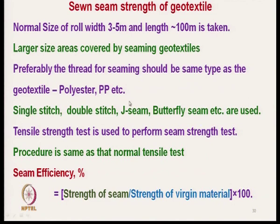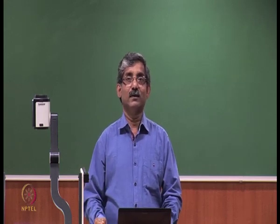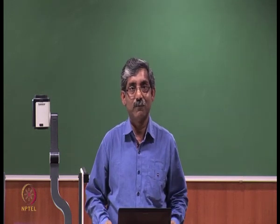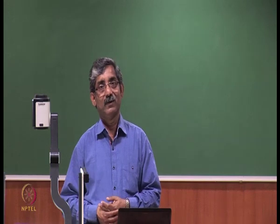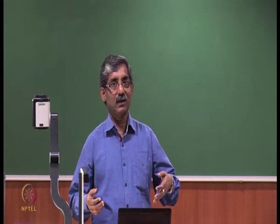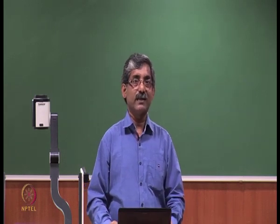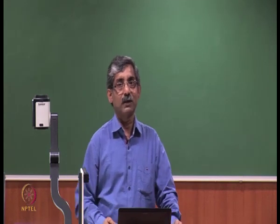Stitches are of different types depending on the application: single stitch, double stitch, J seam, butterfly seam — as per the specification. After imparting the stitch, we test the seam strength by testing the tensile strength at the stitched portion and comparing it with the strength of the virgin material. Seam efficiency in percent is expressed as strength at the seam portion divided by strength of virgin material, multiplied by 100.